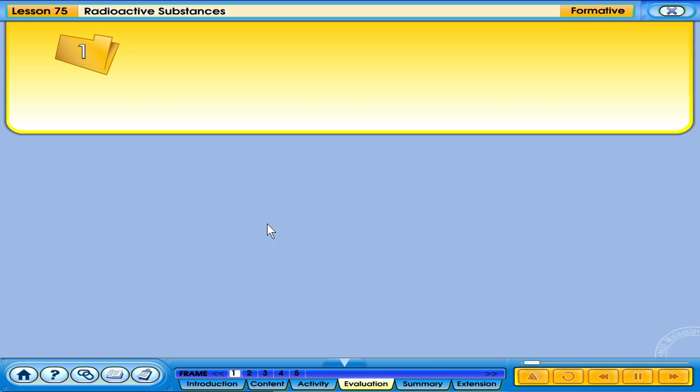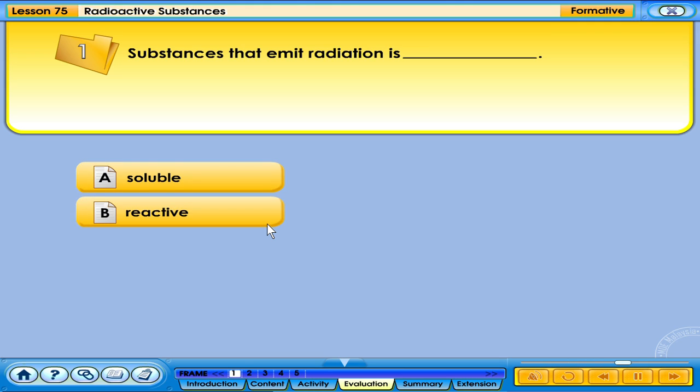Click on the correct answer. Substances that emit radiation are: A. Soluble, B. Reactive, C. Radioactive, D. Combustible.